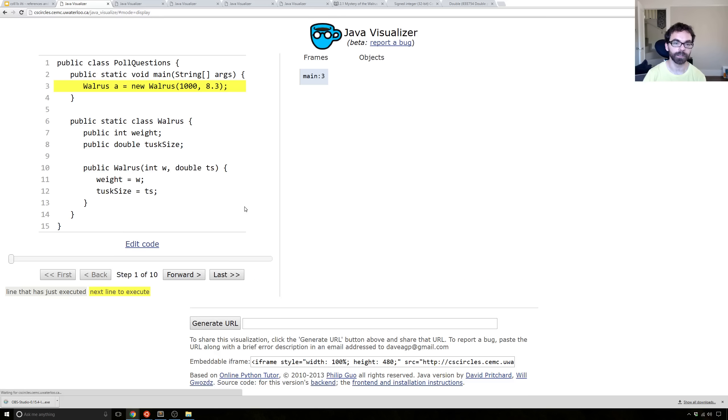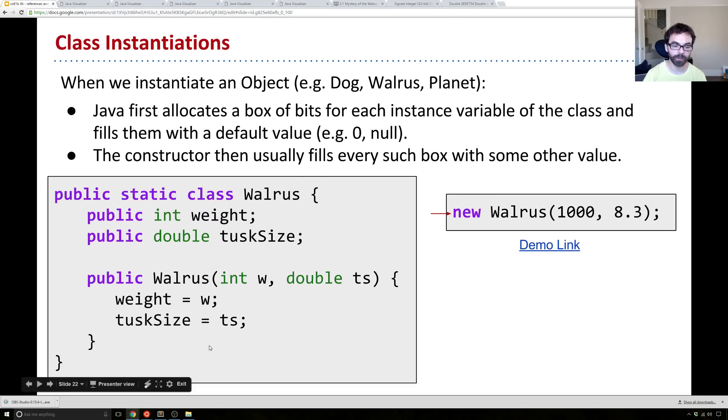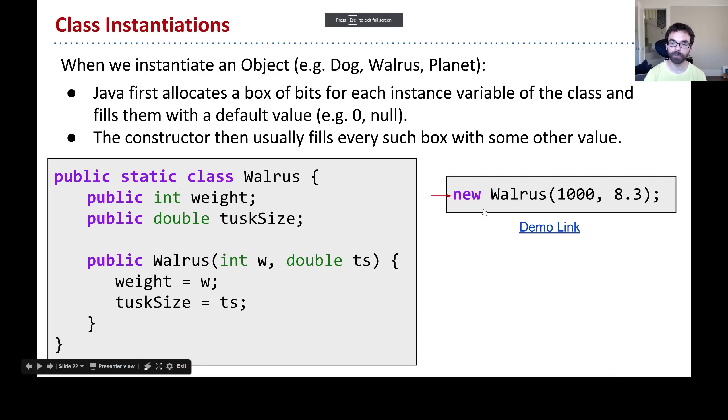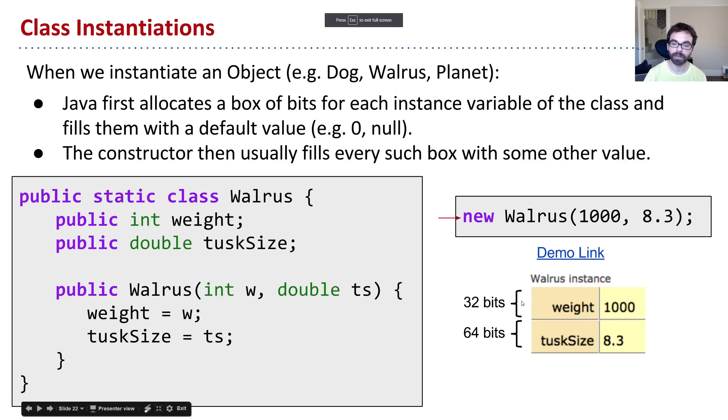So when I run this visualizer here, I will see that walrus, whenever I run the constructor, once I call new, two boxes are created, one for the weight and one for the tusk size. And they're filled in with a default value of 0. Now the constructor will come through and reset them to some other value in this case, though it doesn't necessarily have to do that. So whenever this code runs, what ends up happening, what the new keyword does for us, is it creates two boxes, one of size 32 bits, one of size 64 bits, for a total of 96. So that's what happens when we instantiate an object.